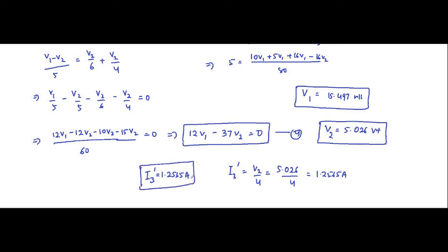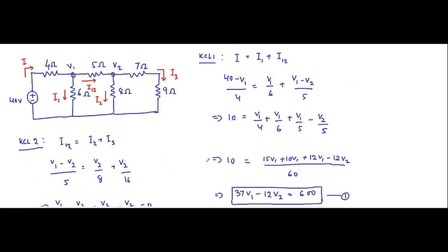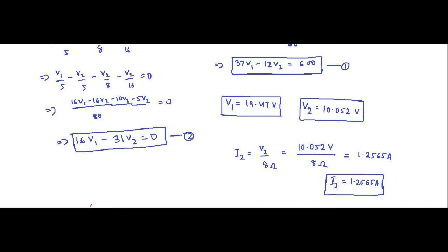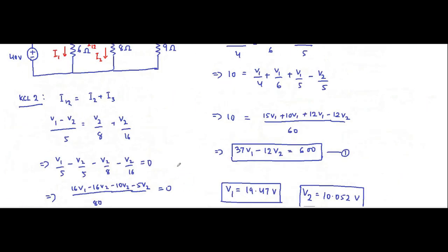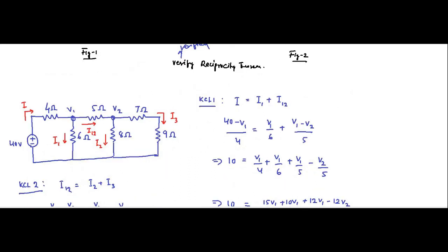If you notice, i3 dash is 1.2565 ampere, and i2 from the first circuit is also 1.2565 ampere. Both currents are equal, so reciprocity theorem is verified and valid. This concludes the fifth question related to the reciprocity theorem. I hope you liked this video — please subscribe to Engineering Tutorial for more videos on engineering, science and technology. Have a great day, thank you very much.